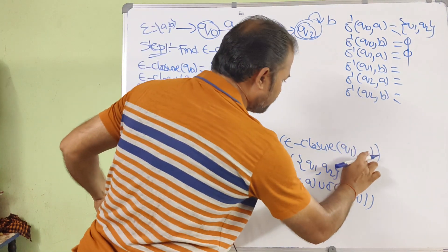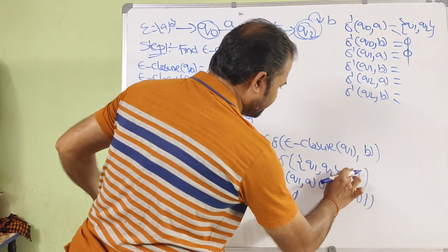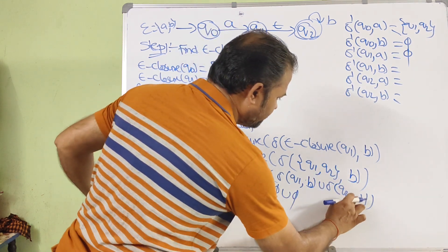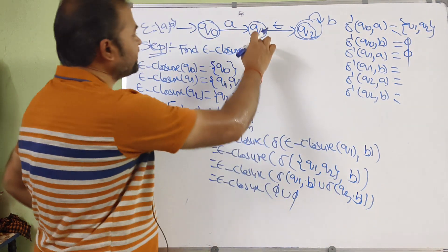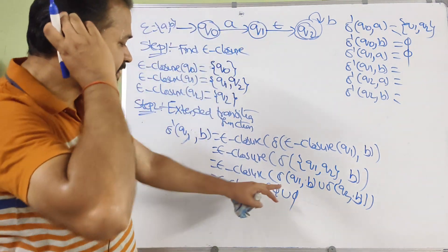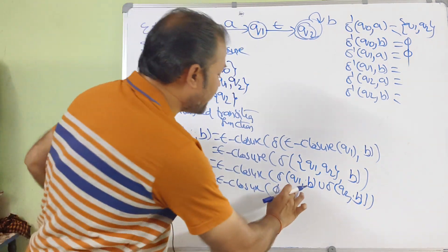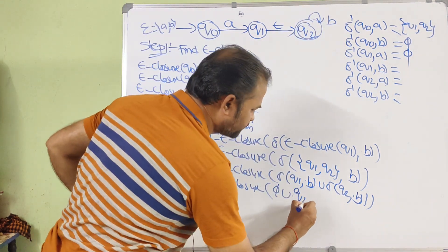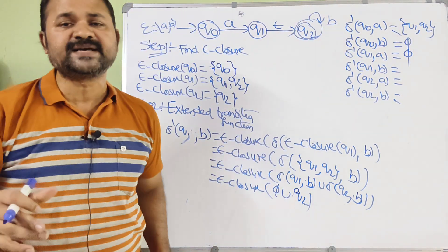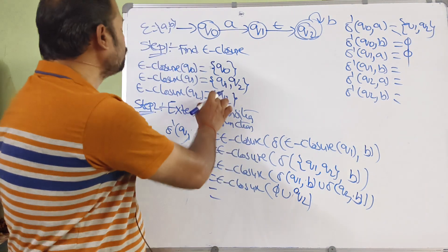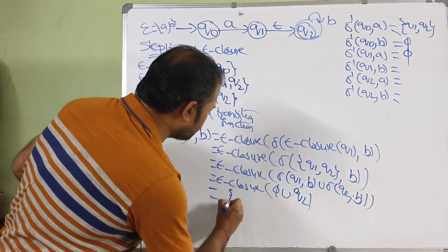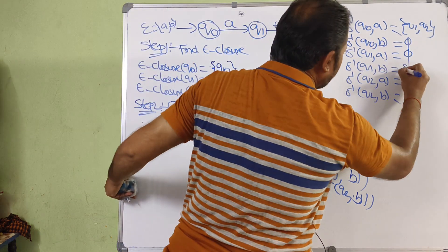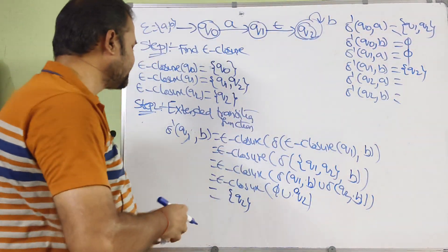Now calculate δ̄(Q1, B). Applying the formula with input B on ε-closure(Q1) = {Q1, Q2}: δ(Q1, B) = ∅, whereas δ(Q2, B) = Q2. So ∅ ∪ {Q2} = {Q2}. ε-closure(Q2) = {Q2}. Therefore δ̄(Q1, B) = {Q2}.